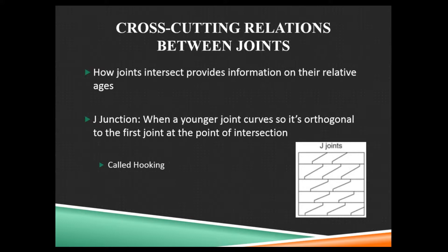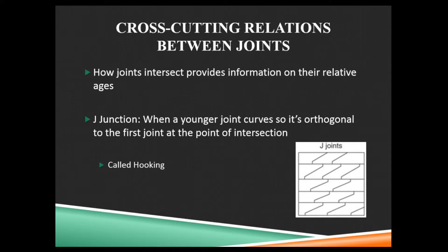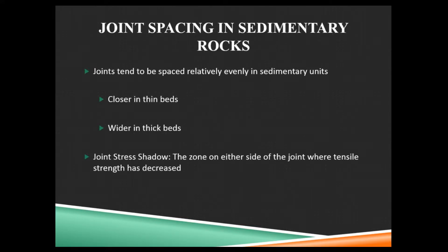The stress was relieved. That curvature at the end is called hooking. The sigmoidal joints — same idea. Those through-going master joints were older, and then the younger angled joints formed. In this case, though, they hooked to go parallel to the master joints instead of hooking to go perpendicular to them.